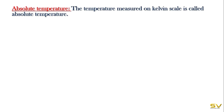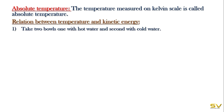Next, absolute temperature. The temperature measured on the Kelvin scale is called absolute temperature. To understand the relation between temperature and kinetic energy, take two bowls — one with hot water and one with cold water.